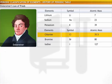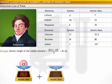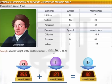Similarly, in the triad of chlorine, bromine, and iodine, the arithmetic mean of the atomic masses of chlorine and iodine is approximately equal to the atomic mass of bromine.